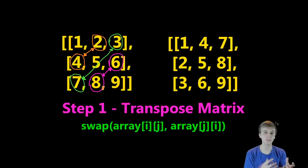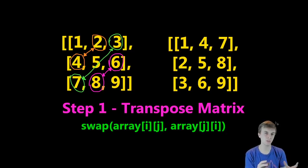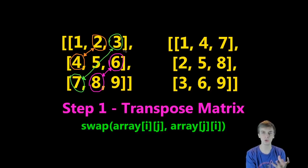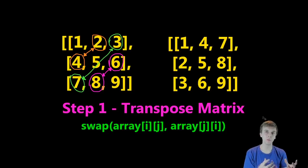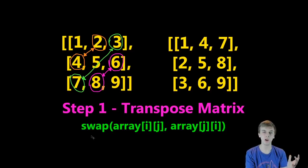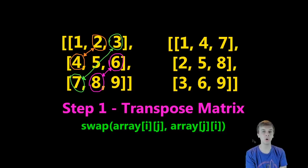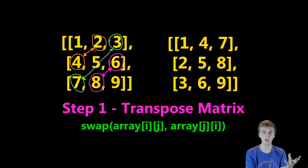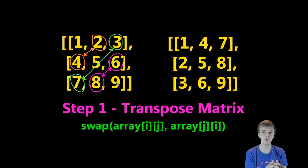We can solve this problem without extra space in two simple steps. The first step is going to be to transpose our matrix. This basically means taking our rows and turning them into columns. You can see in our input array we are taking these rows — row by row — and the first row 1, 2, 3 becomes the first column. And we can do this very simply by looping through our matrix and doing this basic swap. The formula is: we're going to swap array[i][j] with array[j][i] — row column with column row.